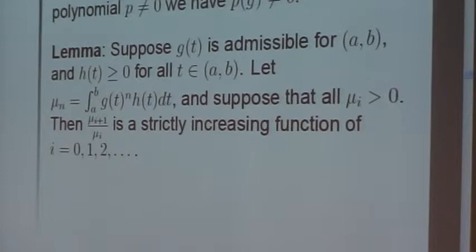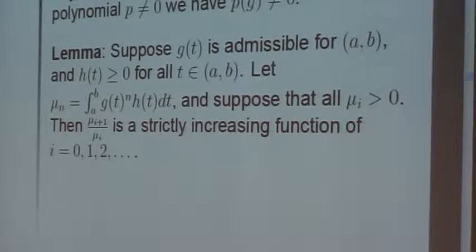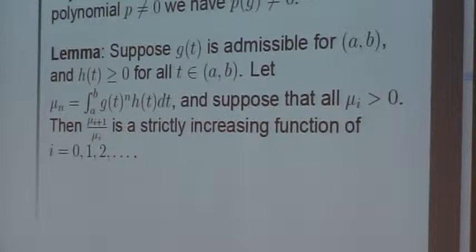And this is basically a theorem about the moment problem. Except instead of using t to the nth, we're using a function of t to the nth. And the assumption is that the g is positive. And the proof is sort of obvious, you just look at the quadratic form.